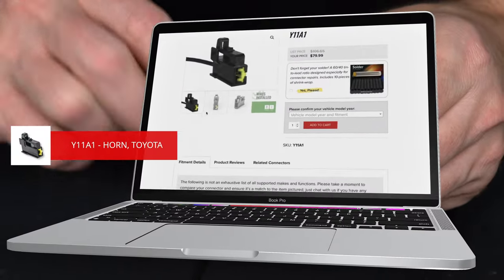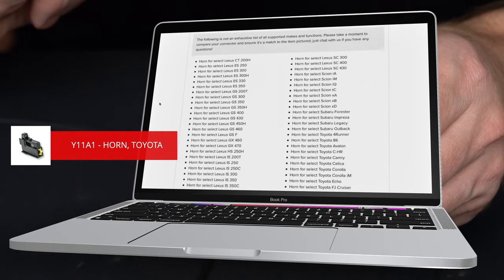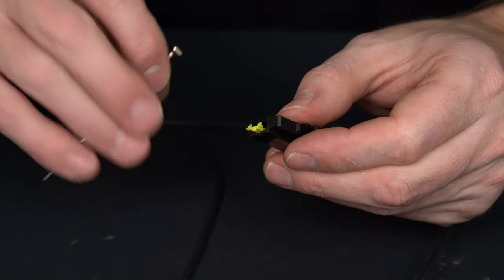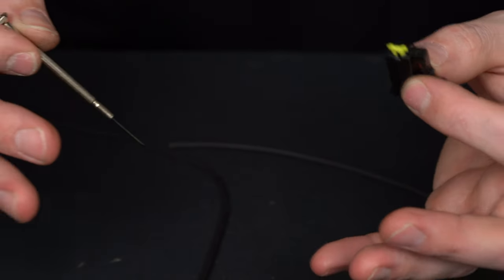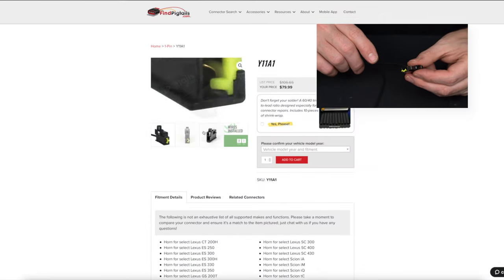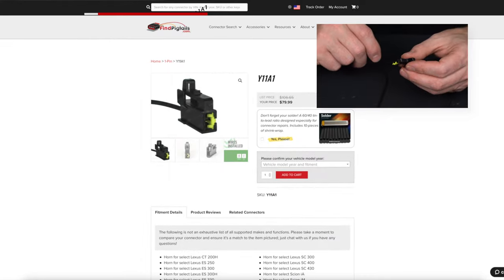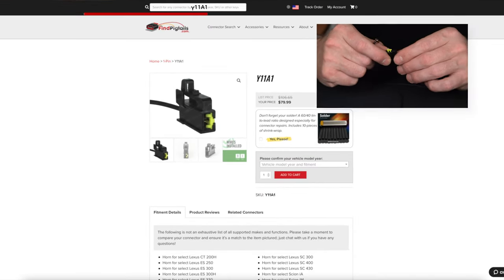This is a Y11A1. You will see this on Toyota, Lexus horns, pretty much all of them, and some Subarus are going to have this. Of course, on our website we'll list it under the vehicle year, make, model breakdown, so you'll know what it uses. You can also type in this part number on the website, and it'll give you an overview of what it's used for as well.